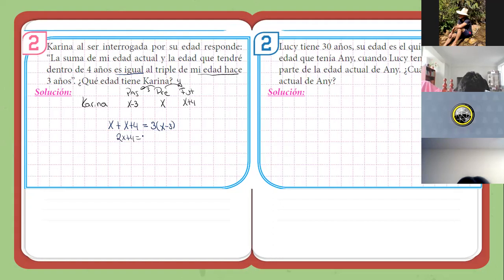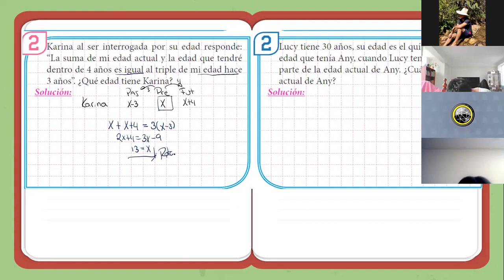Leemos de nuevo y planteamos la ecuación. Dice: la suma de mi edad actual, X, y la edad que tendré dentro de cuatro años, X más cuatro, es igual al triple de mi edad hace tres años. Resolvemos: dos X más cuatro, igual a tres X menos nueve. De acá, X es igual a trece. Dice: ¿qué edad tiene Karina? Justo es el X que nos están pidiendo. Tenemos respuesta.